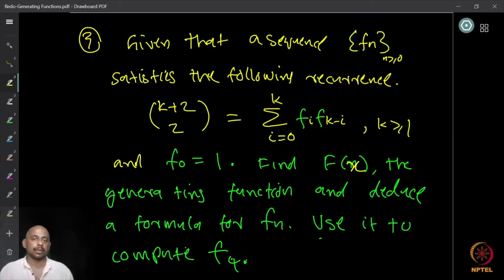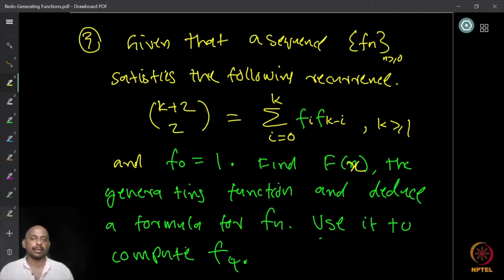The third question asks the following. Given a sequence f_n satisfying the recurrence: summation from i = 0 to k of f_i · f_{k-i} = C(k+2, 2), for k ≥ 1, with f_0 = 1. Find the generating function F(x) for the sequence f_n, use it to deduce a formula for f_n, and then compute f_4 using this identity.